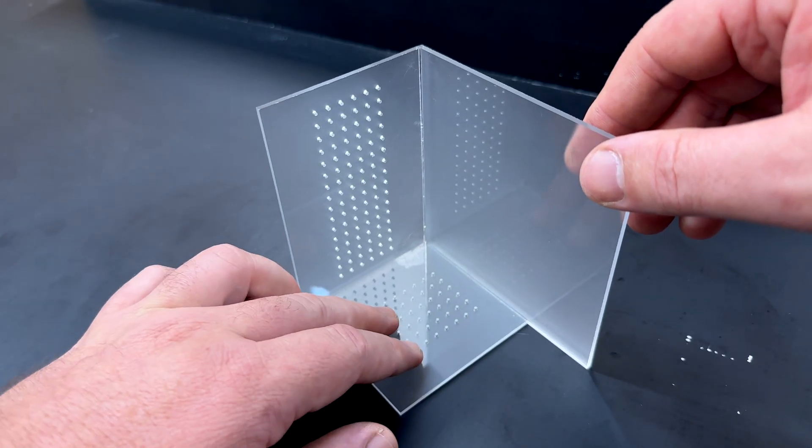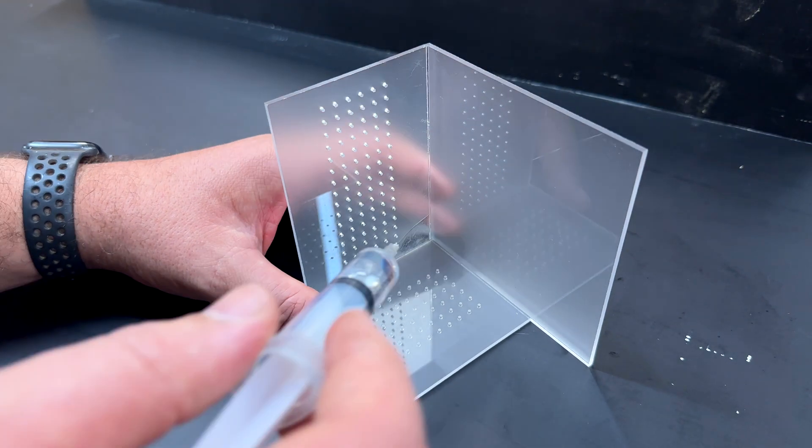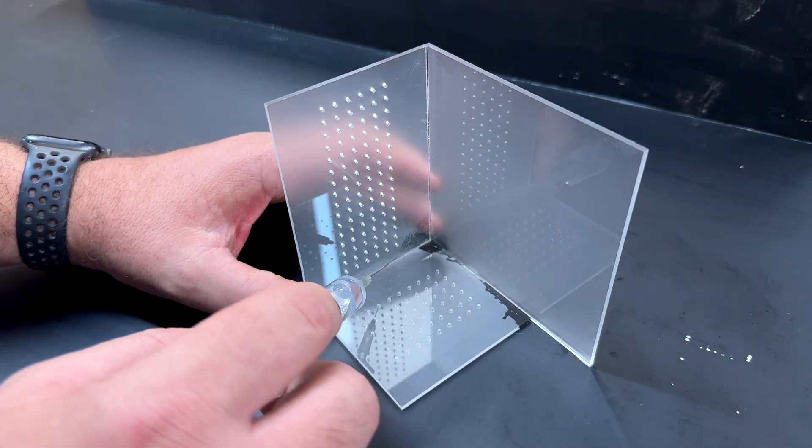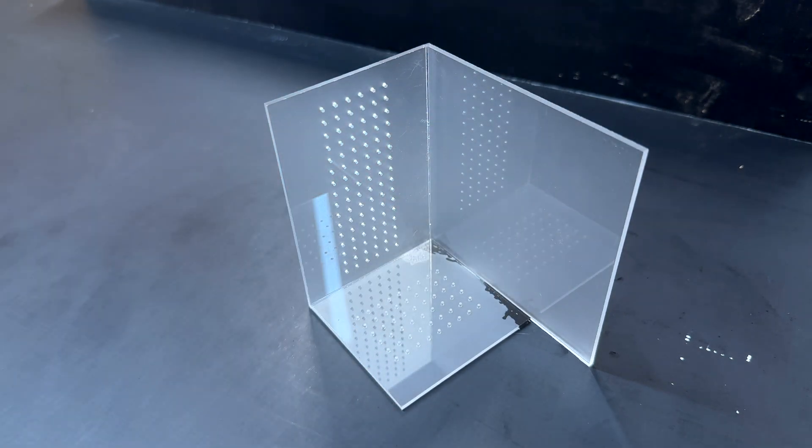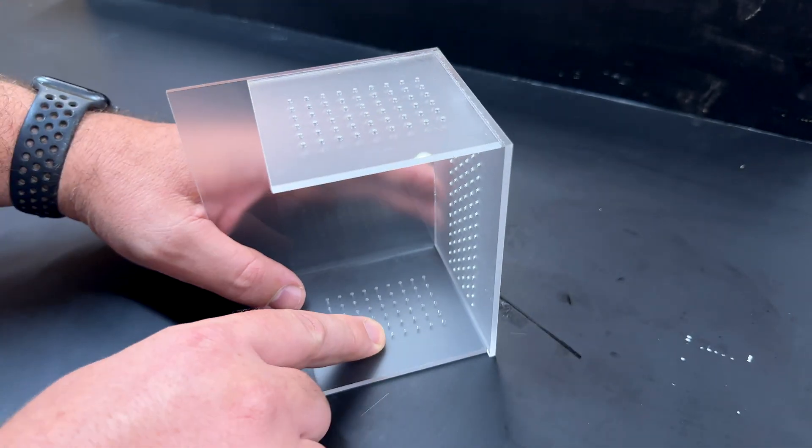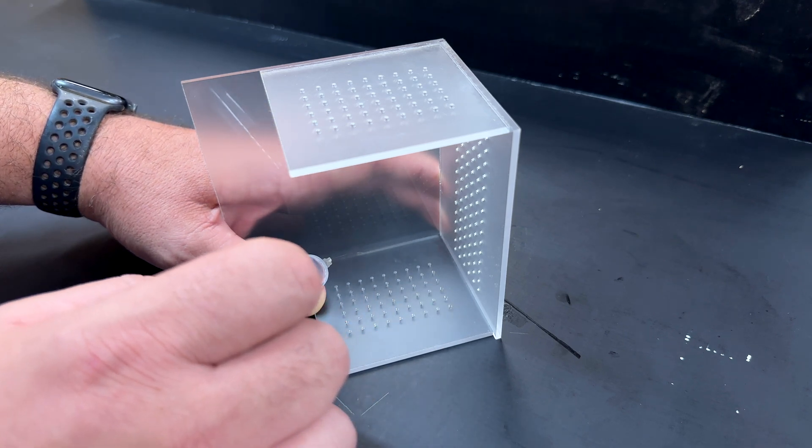The next piece simply slots in place like this. Now we can glue this up as well and I would really recommend you take your time doing this else you make a mess of it like I've done here. And same here we're going to leave this to dry for about 30 or 40 seconds before we move on to the next side.